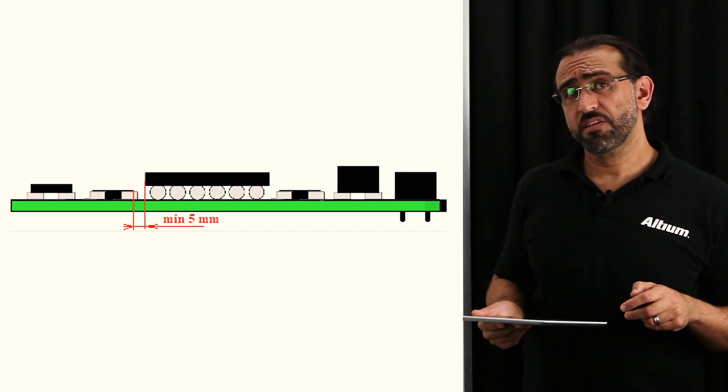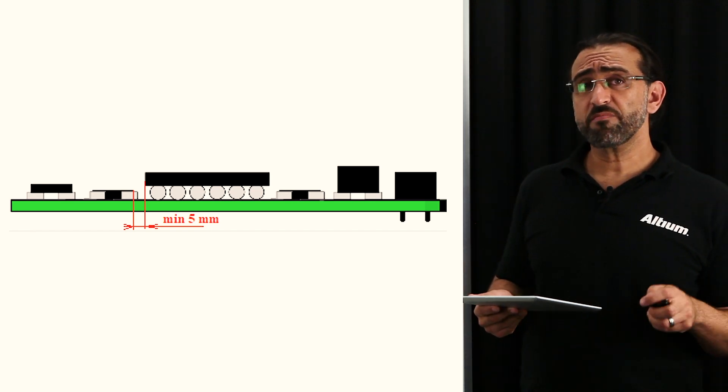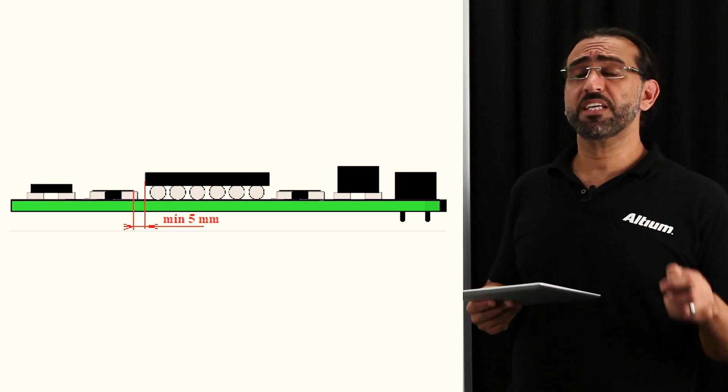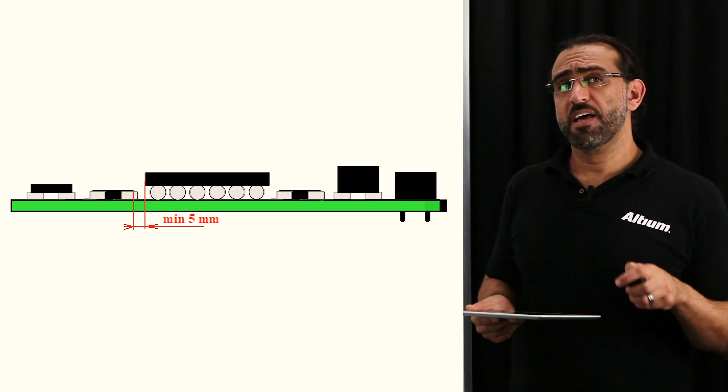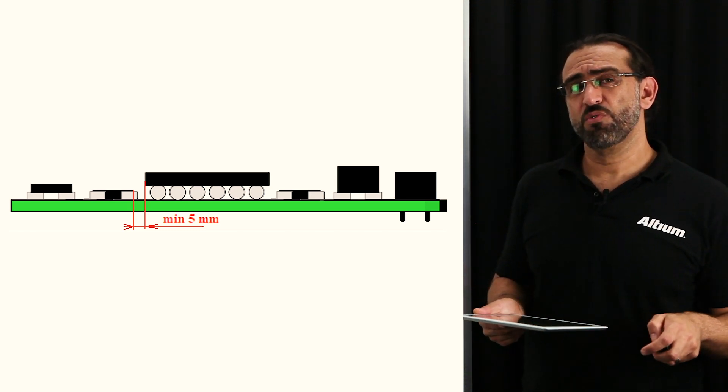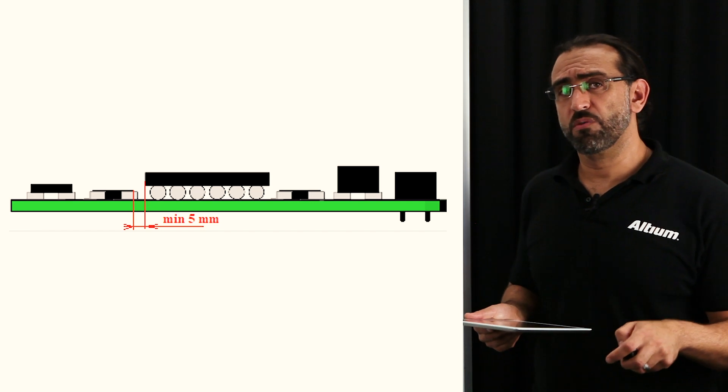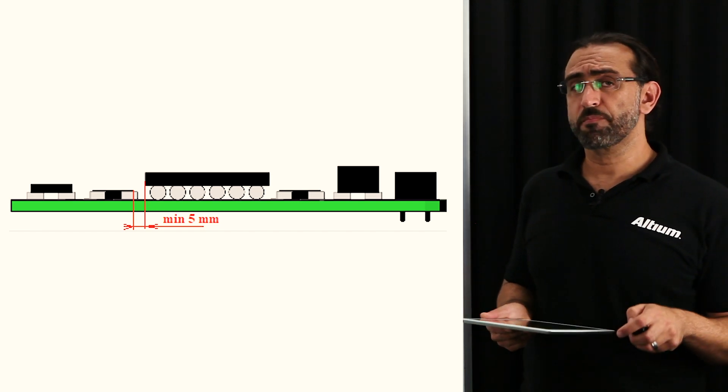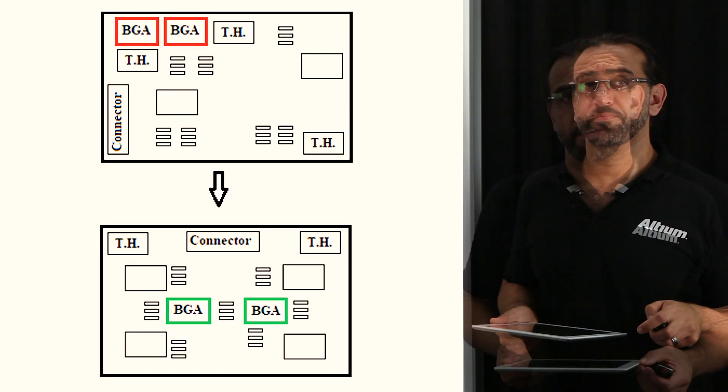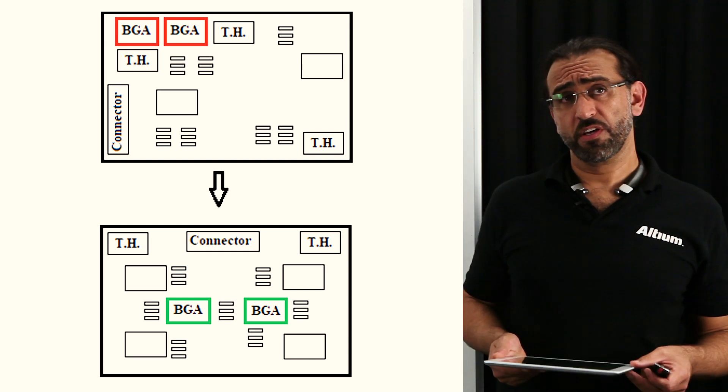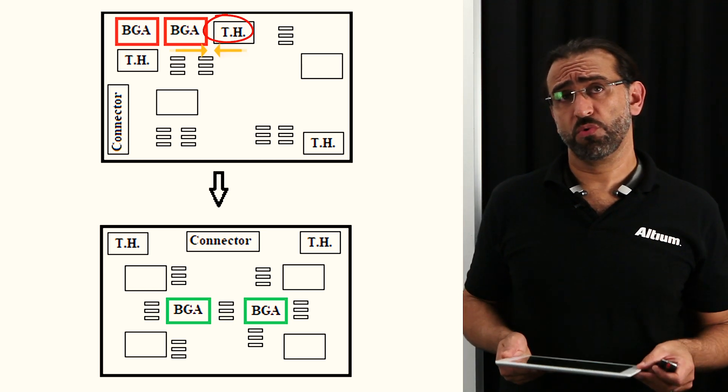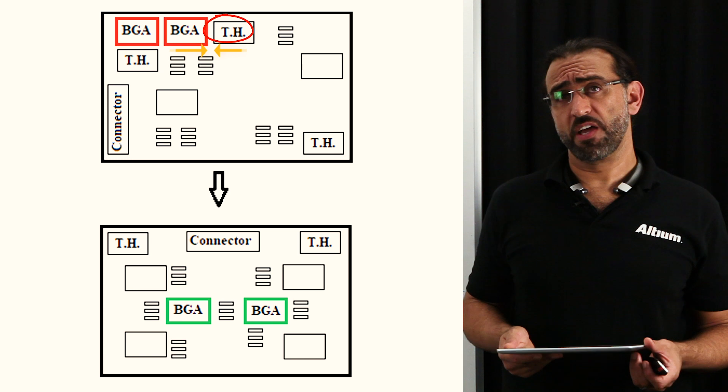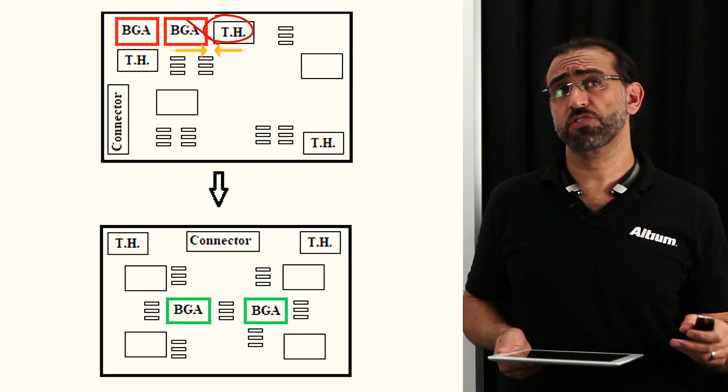We always recommend that you leave at least five millimeters between your BGAs and any passive component, and this becomes really critical and an issue if rework is needed, or what we call reballing for the BGA. And the next image, it's not recommended to place through hole components near BGAs, as they often require different soldering temperatures.